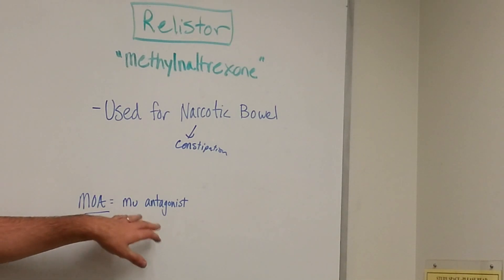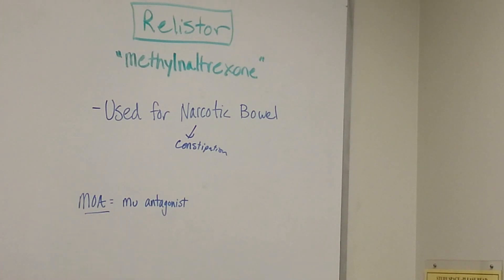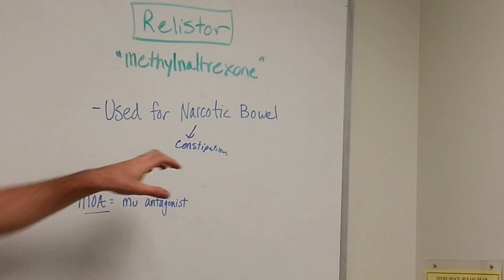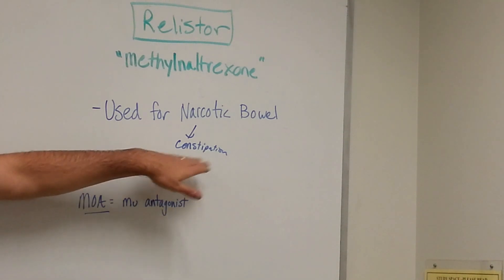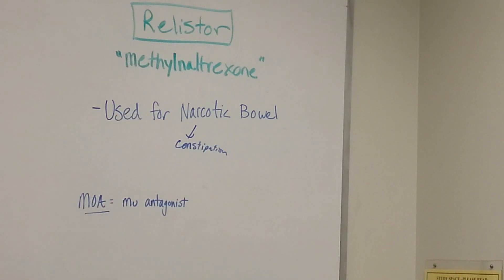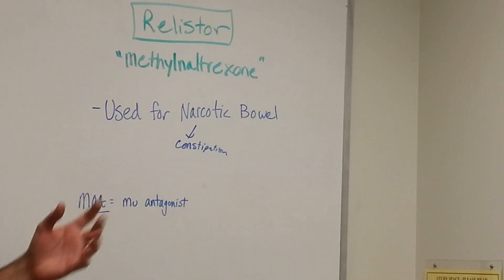As a mu antagonist, it's going to block the opioid effects on the bowels. Opioids shut down the bowels and cause constipation. So by blocking that effect, Relistor helps alleviate the constipation caused by narcotics.